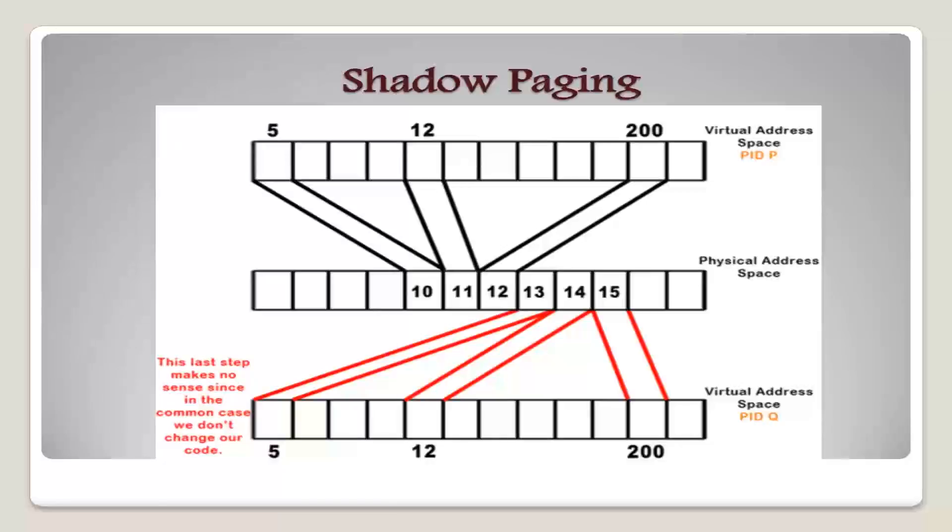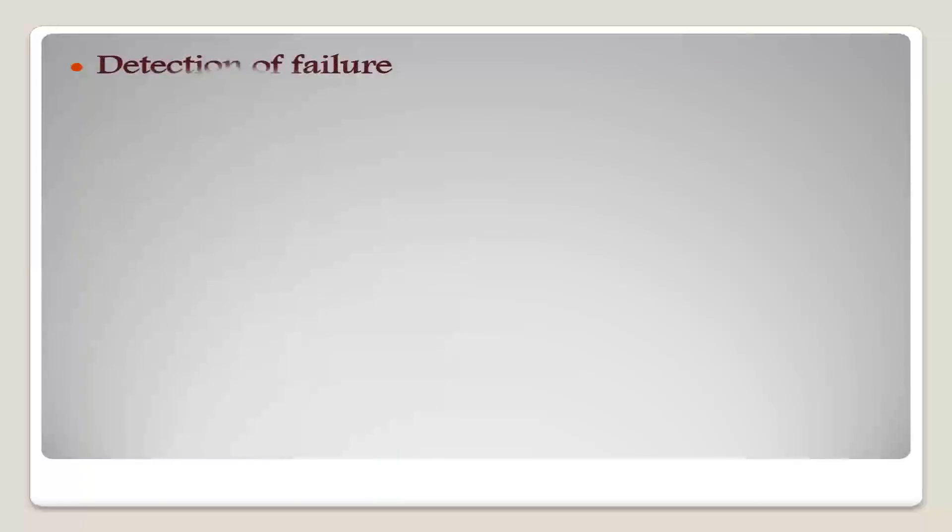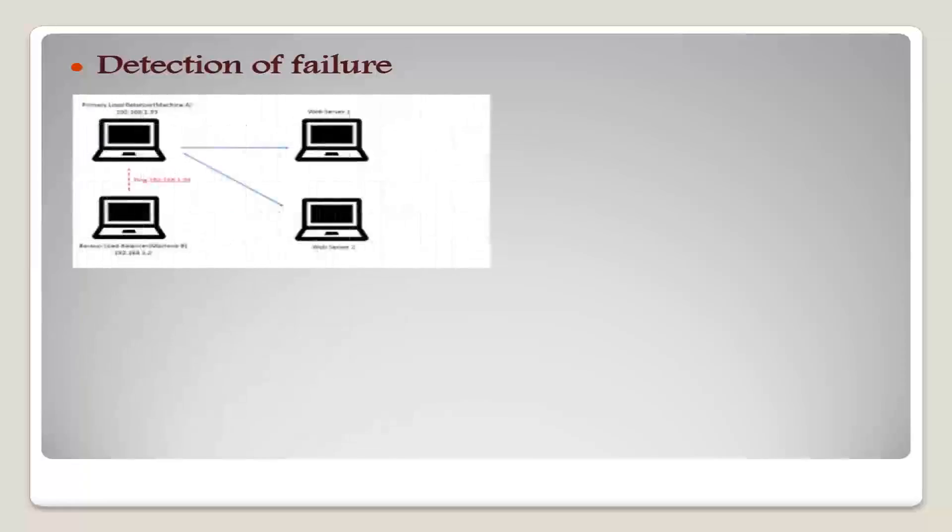Now moving to the next subtopic, that is remote backup systems. The remote backup system provides high availability by allowing transaction processing to continue even if the primary site is destroyed. Next is the detection of failure. The backup site must detect when the primary site has failed. To distinguish primary site failure from link failure, maintain several communication links between the primary and remote backup.